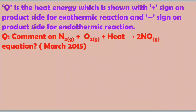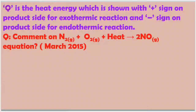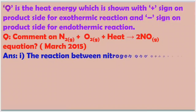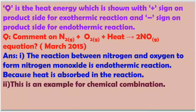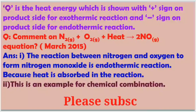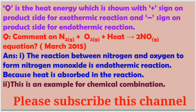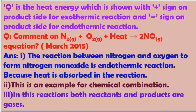Now we will look at a previous public examination question from March 2015: 'Comment on the reaction — nitrogen reacts with oxygen by absorbing heat to form nitrogen monoxide.' By observing this equation, the reaction between nitrogen and oxygen to form nitrogen monoxide is an endothermic reaction, because heat is absorbed in the reaction. This is also an example of chemical combination, as two reactants combine to form a single product, and both reactants and products are gases.